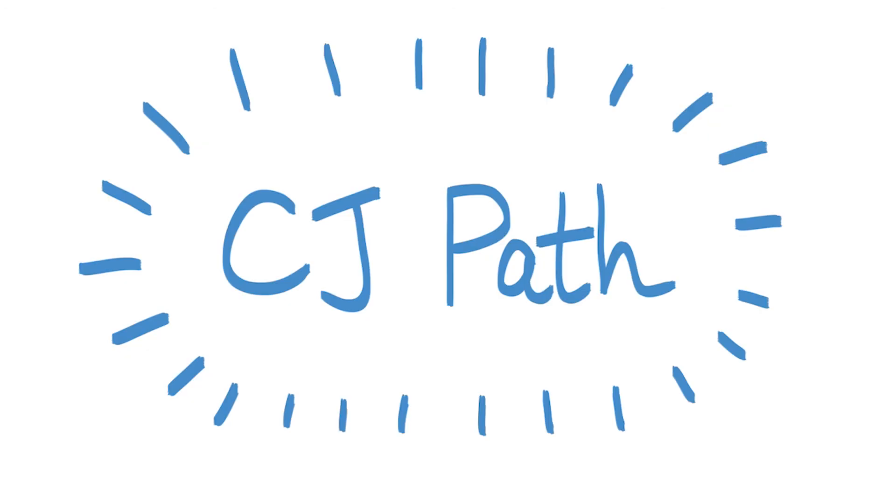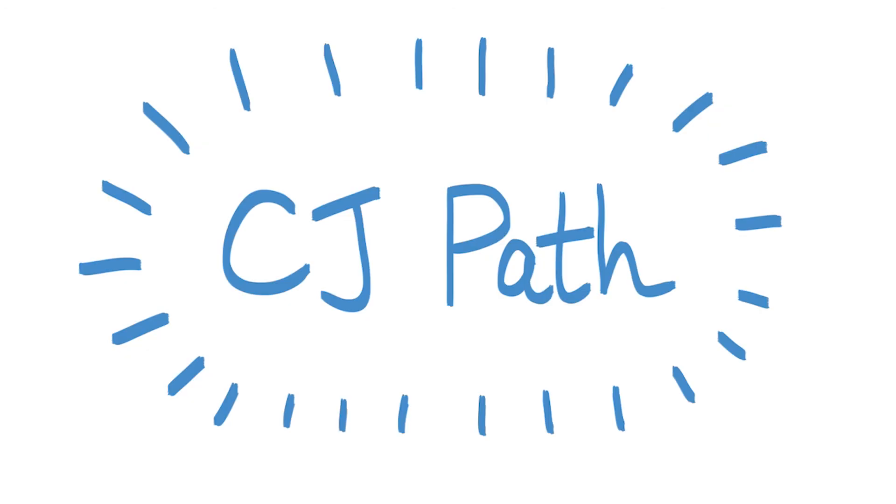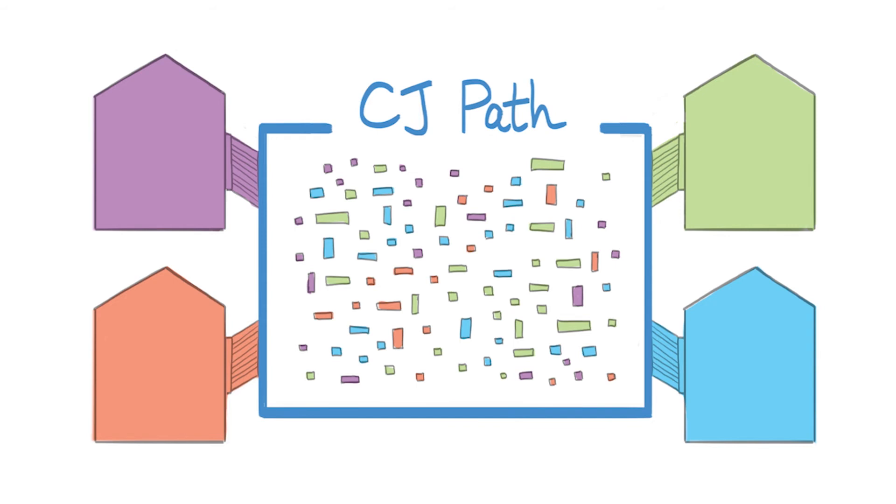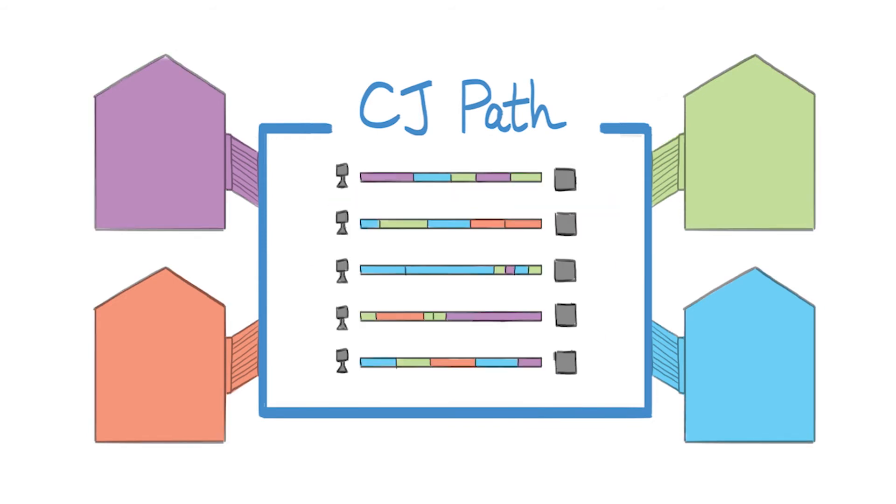CJ Path is a customer journey path analysis application that is able to fuse the fragmented multiple data streams across time, channels, and devices, and connect all the touchpoints to generate a cohesive view of each individual customer journey.